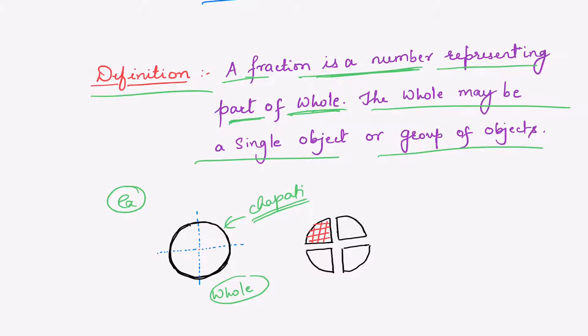Now if we divide into four parts like this, by cutting along this axis and by cutting along this axis. Naturally, it will be converted into four equal parts of chapati or four quarters like this.